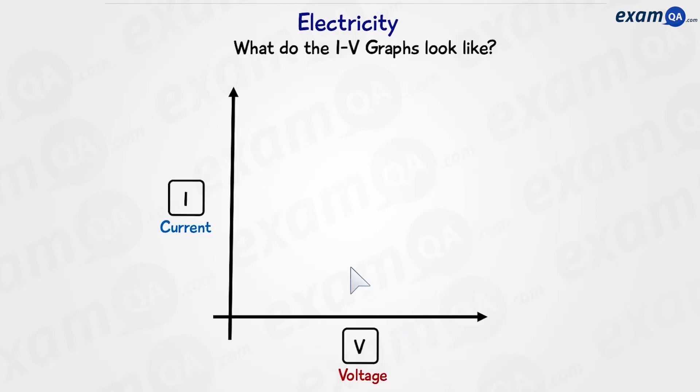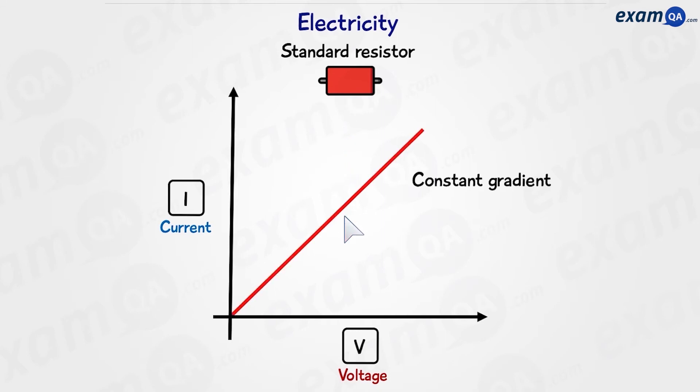What will the IV graph look like? We can see that we have current on the y-axis and voltage on the x-axis. Will every graph have the same shape? Nope, it depends on the type of component. Let's start by looking at the standard resistor. The standard resistor will have a straight line, like we saw earlier. It has a constant gradient, which means it has constant resistance.